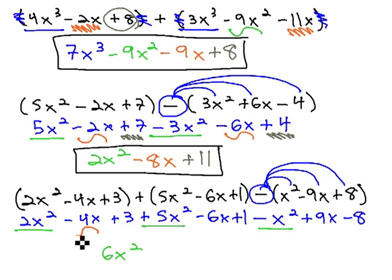We also have negative 4x minus 6x plus 9x, which will give us negative x.